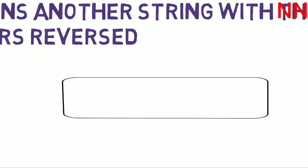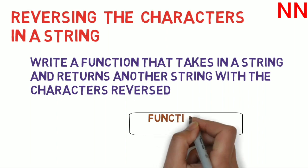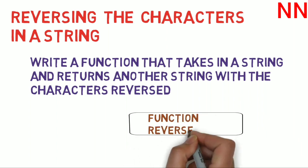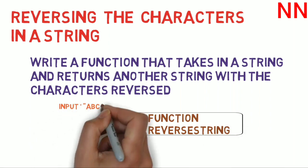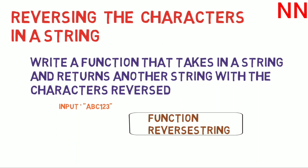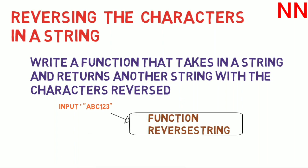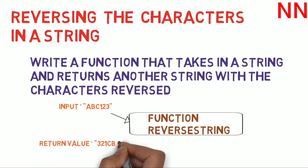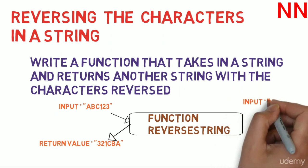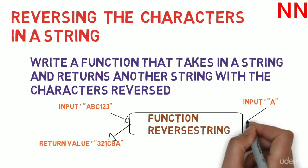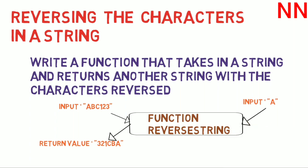Basically what we want is a function called reverse string and it takes in some input. Let's assume that input is ABC123 — that is the string we want to input into this function. The return value we want for this input is 321CBA, that is the reverse string. Now suppose the input was simply A, a single character string — the output should simply be A.